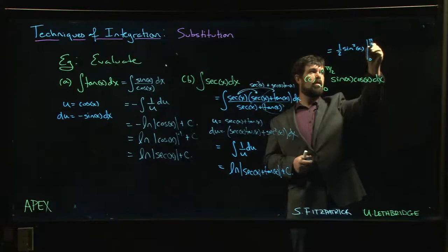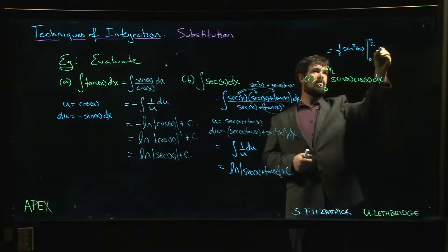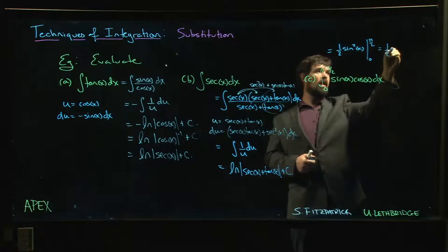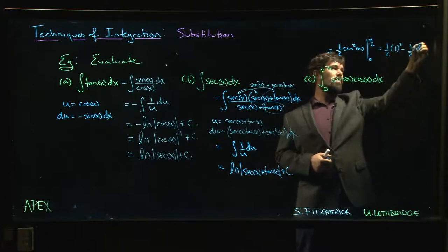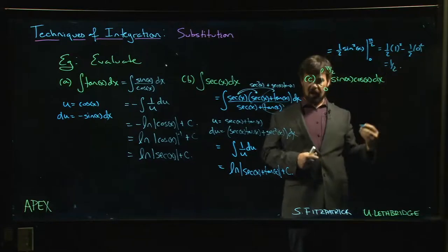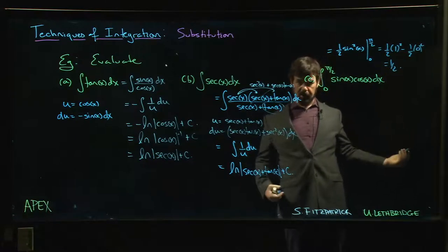We evaluate from 0 to pi over 2. So it's 1 half times 1 squared minus 1 half times 0 squared. Answer is 1 half. We're done, so you might wonder why I'm still talking.